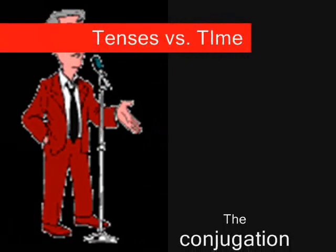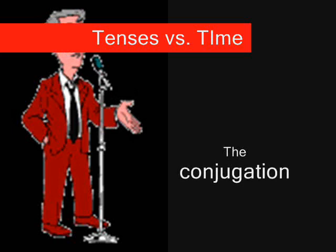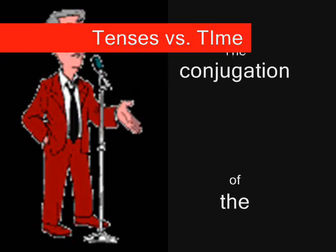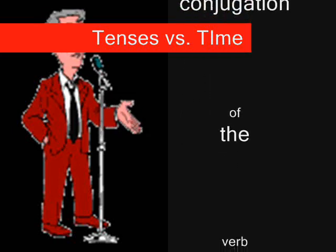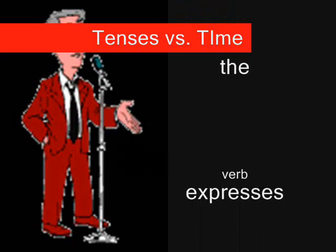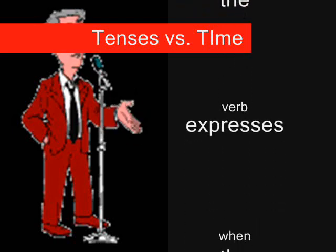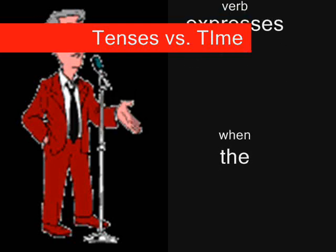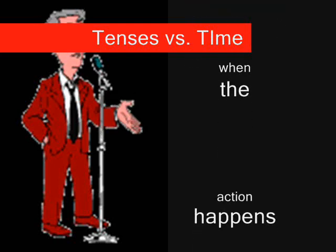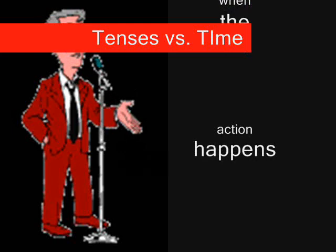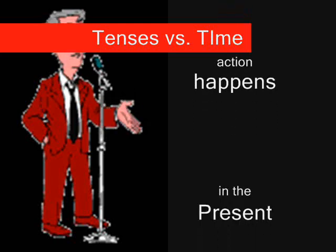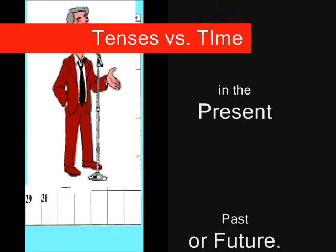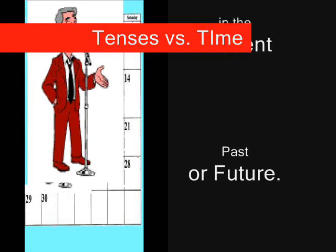Tenses versus time. The conjugation of the verb expresses when the action happens — in the present, in the past, or the future.